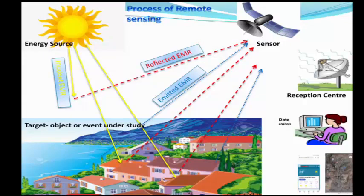In this video, we have discussed the components of remote sensing, spectral signatures, and how the process of remote sensing takes place. Hope you have understood the video. In the next upcoming video, we are going to study about types of remote sensing. Please stay tuned for the new video and please don't forget to subscribe to my channel. Thank you.